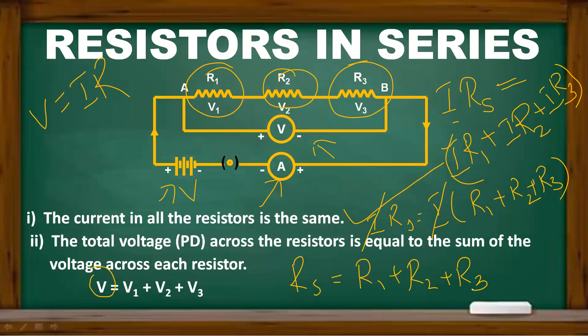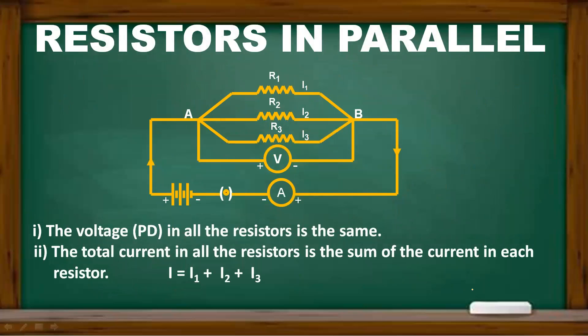That is why parallel resistors are a very important derivation. In a parallel connection, R1, R2, and R3 are connected to the two ends of the battery. The potential difference across each resistor is the same, and the total current is the sum of the currents through individual resistors. So I equals I1 plus I2 plus I3.